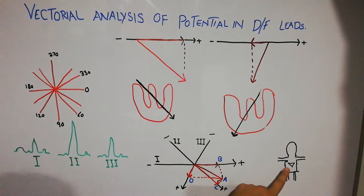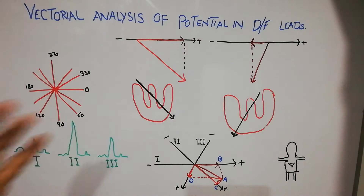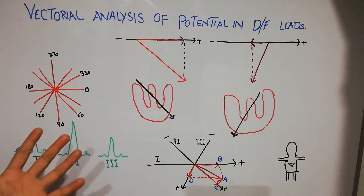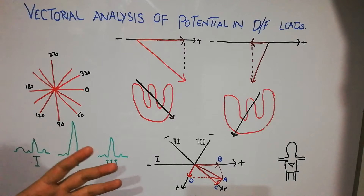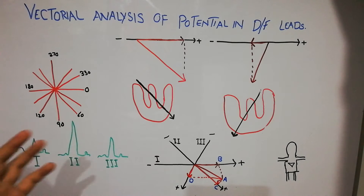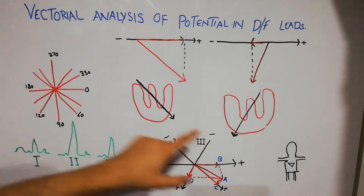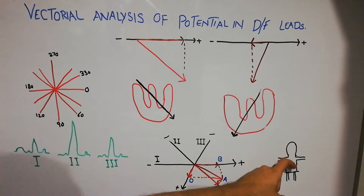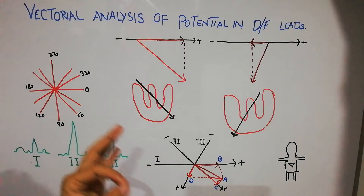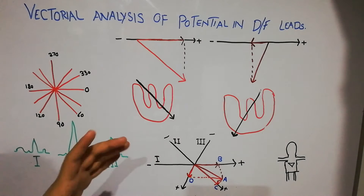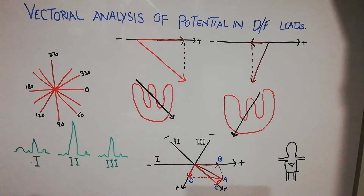We discussed that whenever there is depolarization of the heart, there is a wave of electric current moving through the heart. That wave of electric current can spread into the surrounding structures and be detected from different parts of the body with the help of electrodes. As this current spreads in a specific direction, it forms small vectors which combine together into one vector known as the mean instantaneous vector.